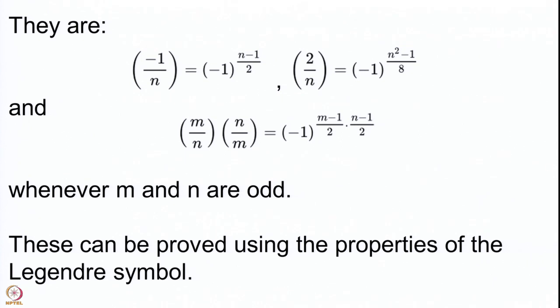However, I caution you that the Euler criterion — that (a/p) ≡ a^((p−1)/2) mod p for the Legendre symbol — does not generalize to the Jacobi symbol. We will discuss this and other interesting things regarding the Jacobi symbol in the next lecture, and then begin our next theme. See you soon. Thank you very much.